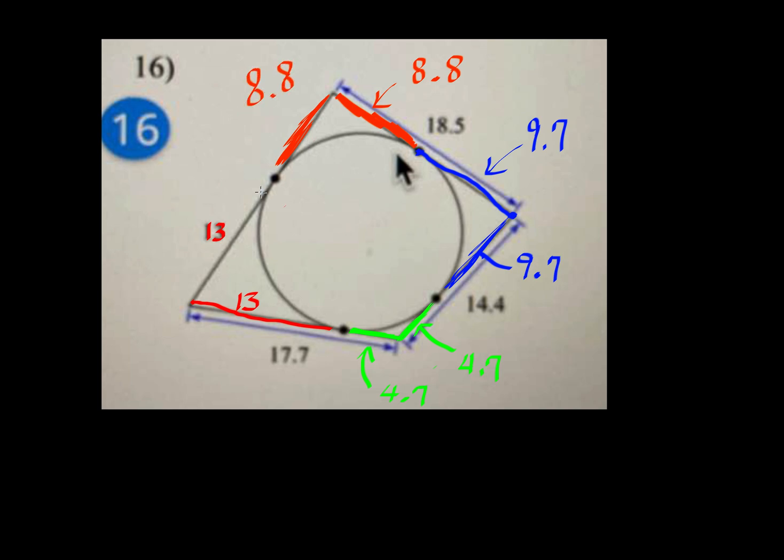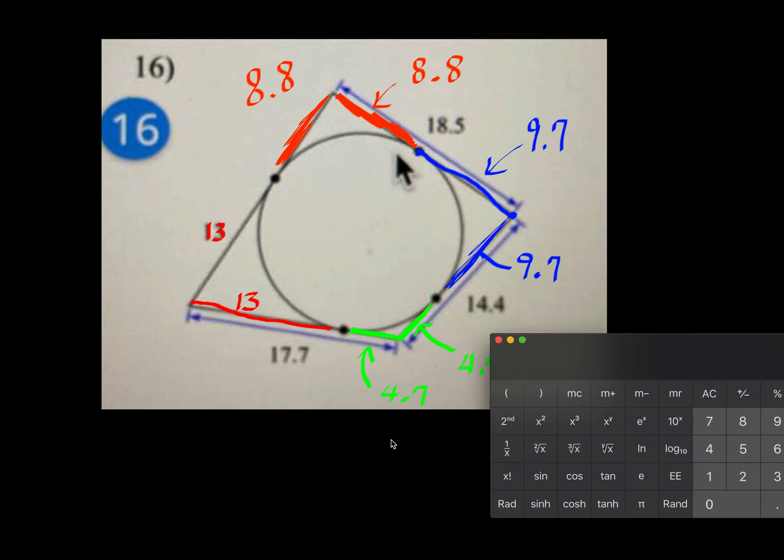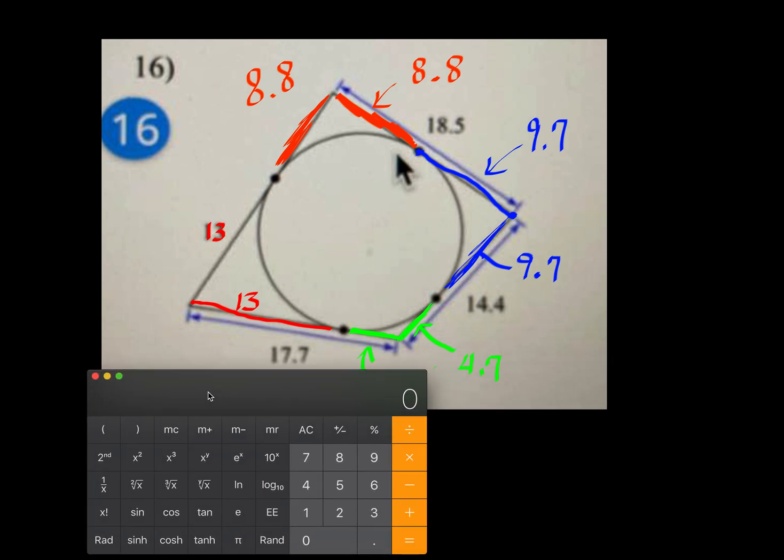And then the question is asking you to find the whole perimeter of this quadrilateral. So all we got to do is now add all those sides. So the bottom one, it's 17.7, the whole thing, 17.7, plus the right side here is 14.4.